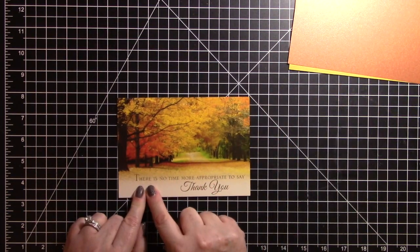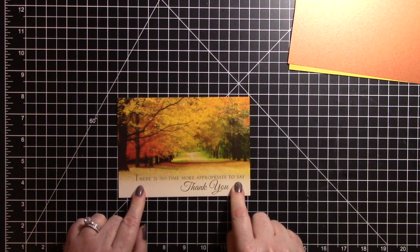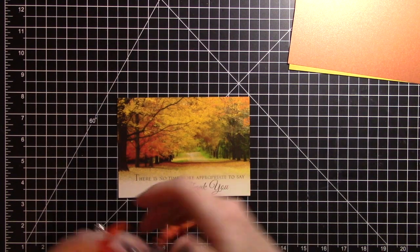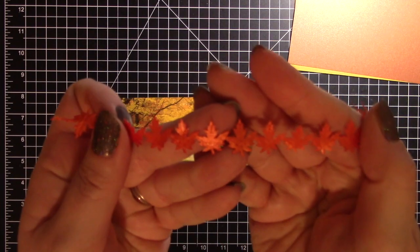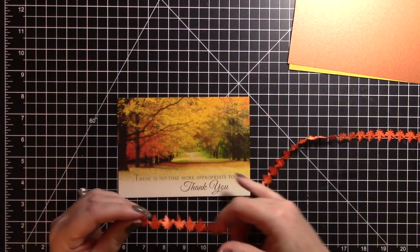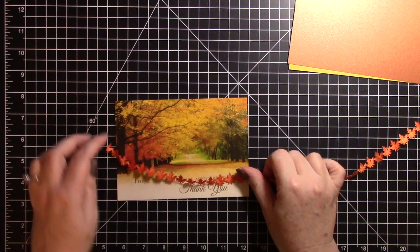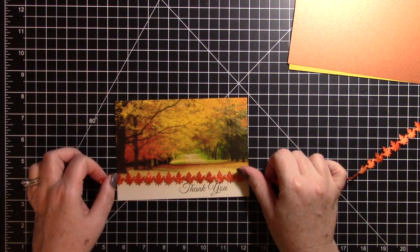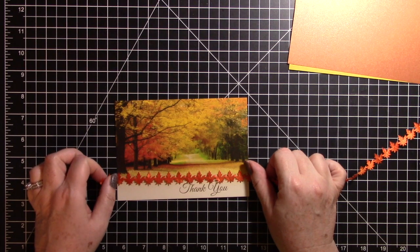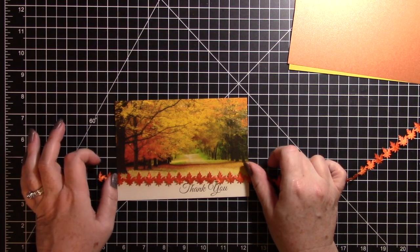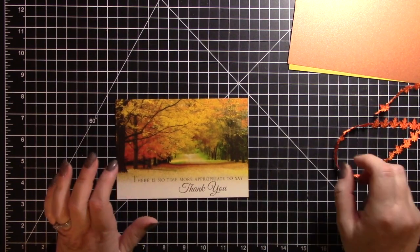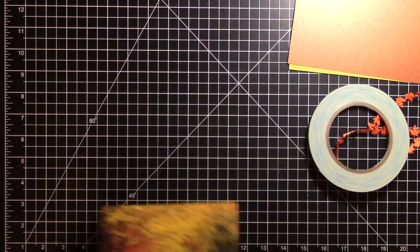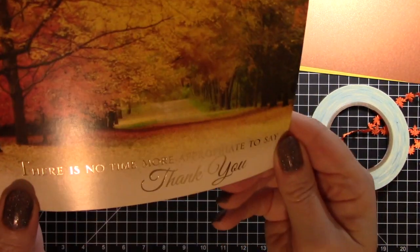I do want to cover up this line that says there is no time more appropriate to say, and I have this really pretty trim, it is these fall leaves that came in that embellishment box. I was playing around with it before and I think it just looks really great if it just lines that and you cannot see then the words below it at all. The words underneath it, you might get a little bit of gold sparkling come through which that's fine because that is a gold metallic there.